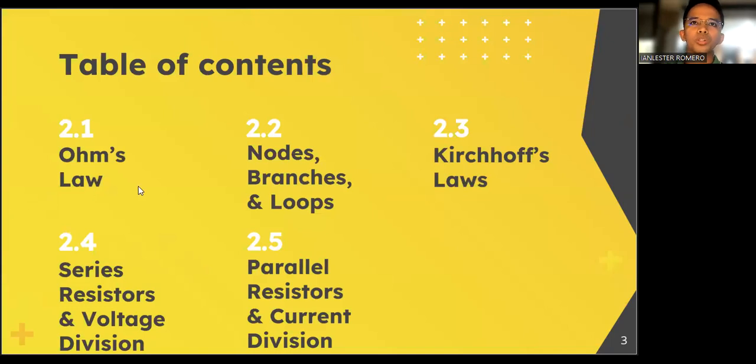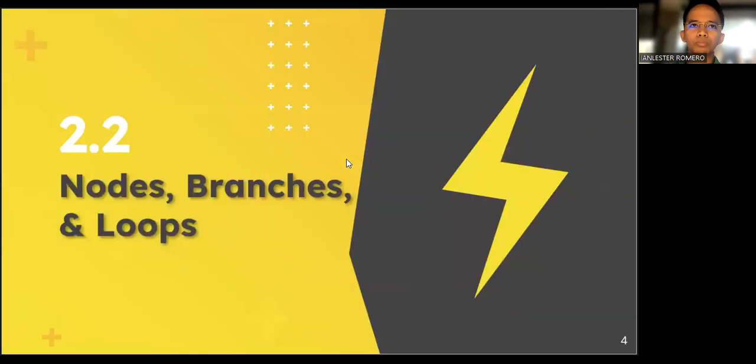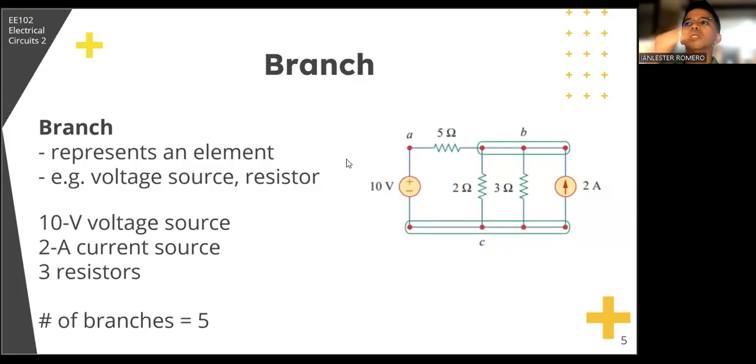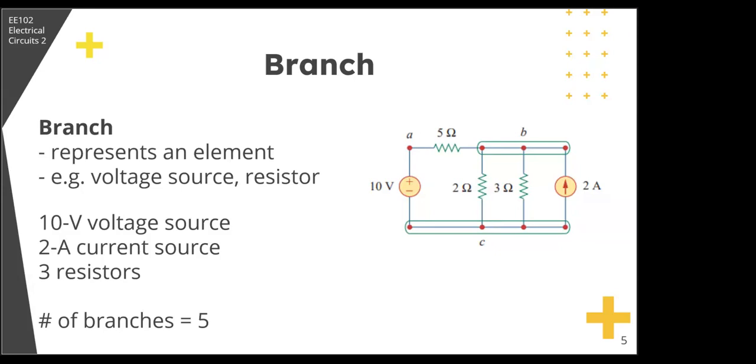So we're done with Ohm's law. Let's now proceed to nodes, branches, and loops. Since the elements of an electric circuit can be interconnected in several ways, we need to understand some basic concepts of network topology. These are branches, nodes, and loops.